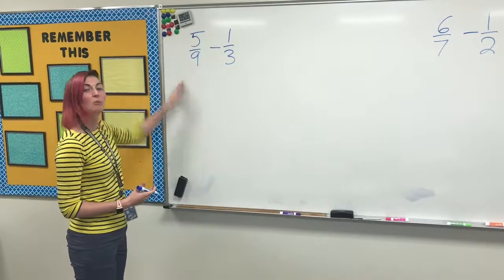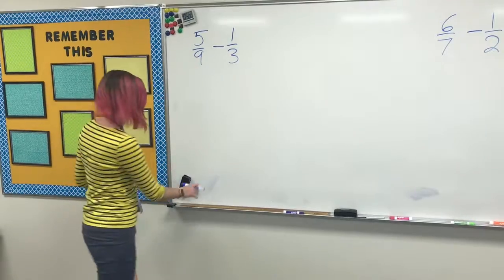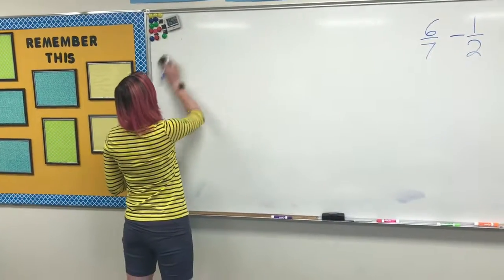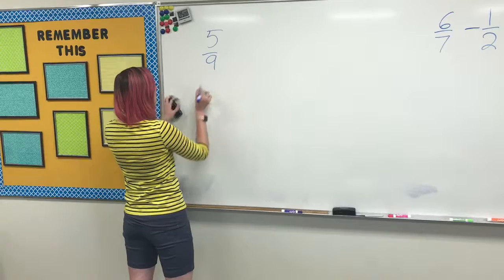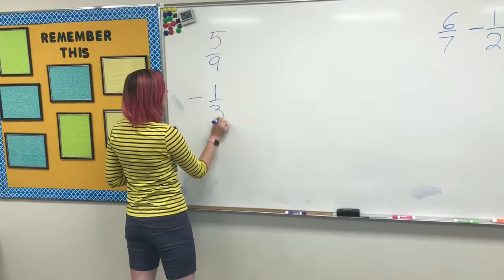It's written horizontally. We want to stack it up and write it vertically. 5 9ths minus 1 3rd.